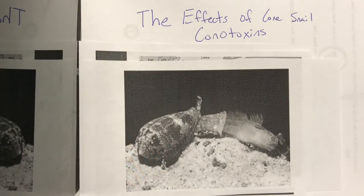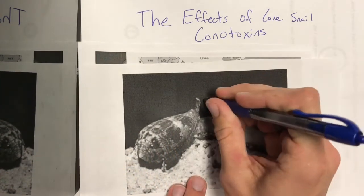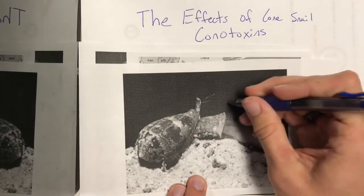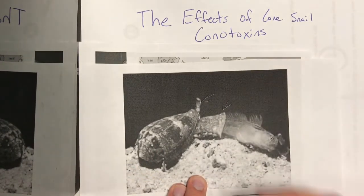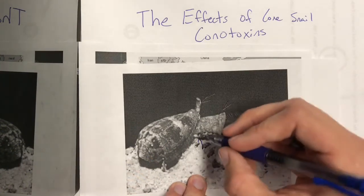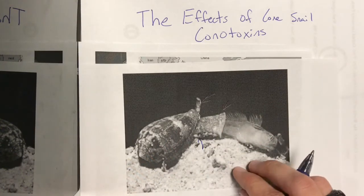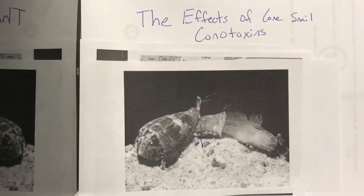Here's a picture of a cone snail eating a fish. Here's the siphon right here, the mouth, and the eye of the cone snail. You can't really see it that well, but it's not that important because cone snails go mainly off of their sense of smell.